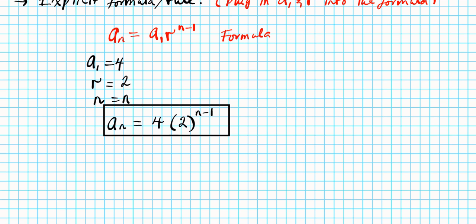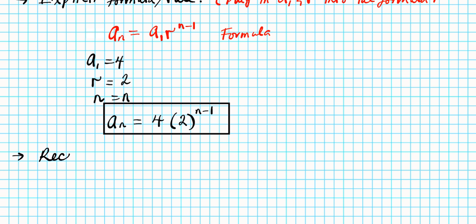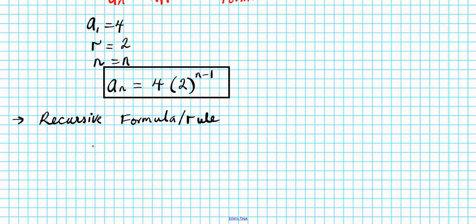Last but not the least is to determine the recursive formula or rule. Let's write that down, recursive formula or rule. Now, for this one, you just have to write down the nth term An and ask yourself, what do you do repeatedly to generate the terms of the sequence? You take the term before it, An minus 1 and multiply it by the common ratio. In this case, the common ratio is 2. So you just basically multiply a term before it by 2 to get the next term. And then don't forget to indicate what the first term is in your recursive formula. First term is 4. So that's basically the recursive formula for the geometric sequence under consideration.